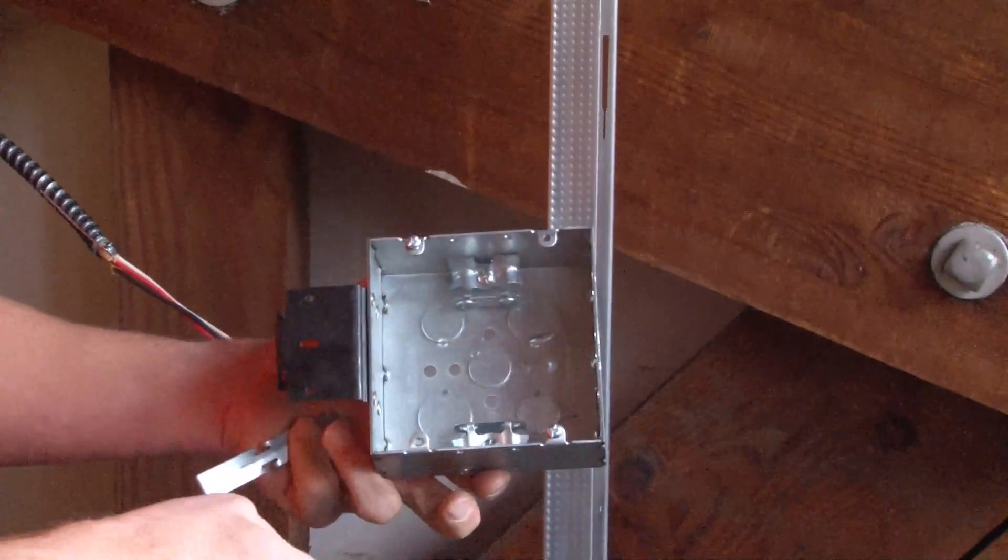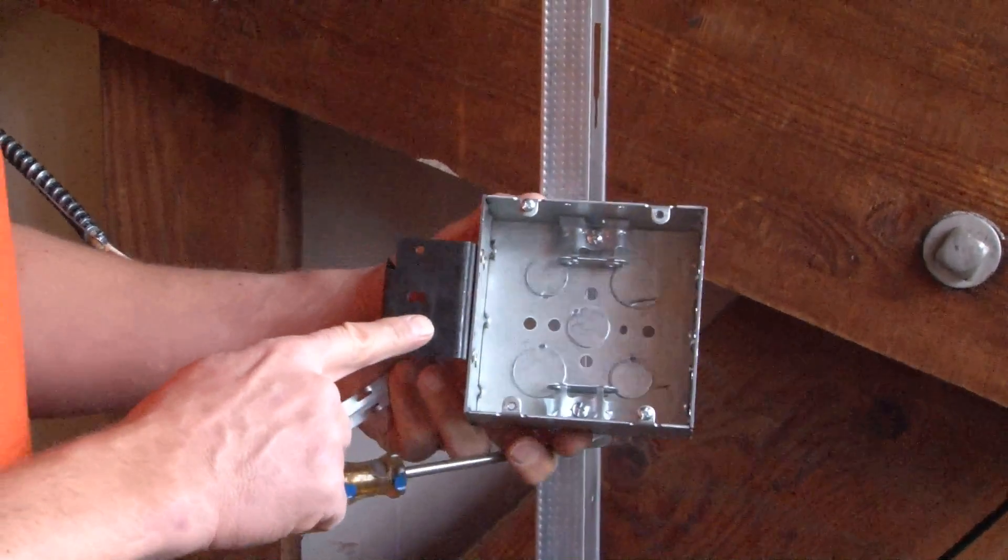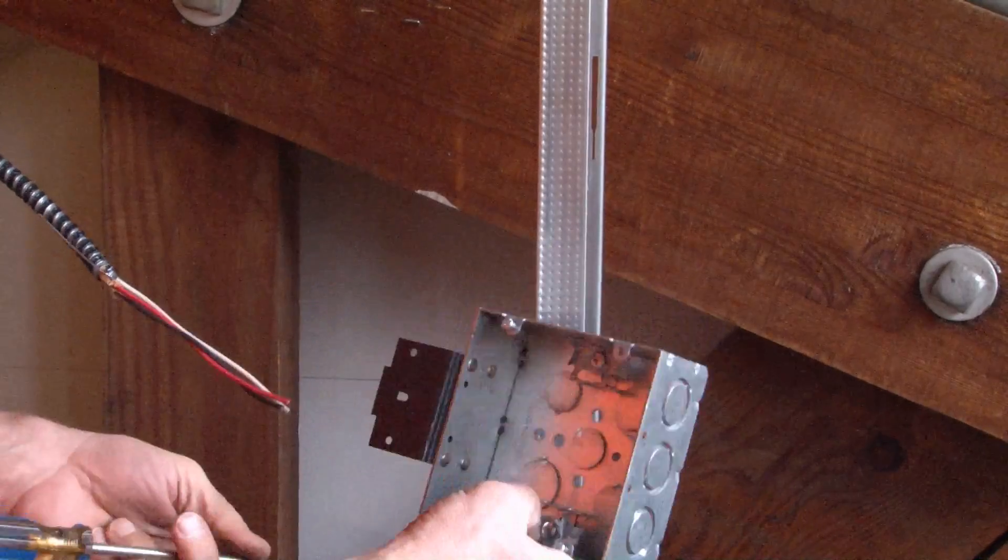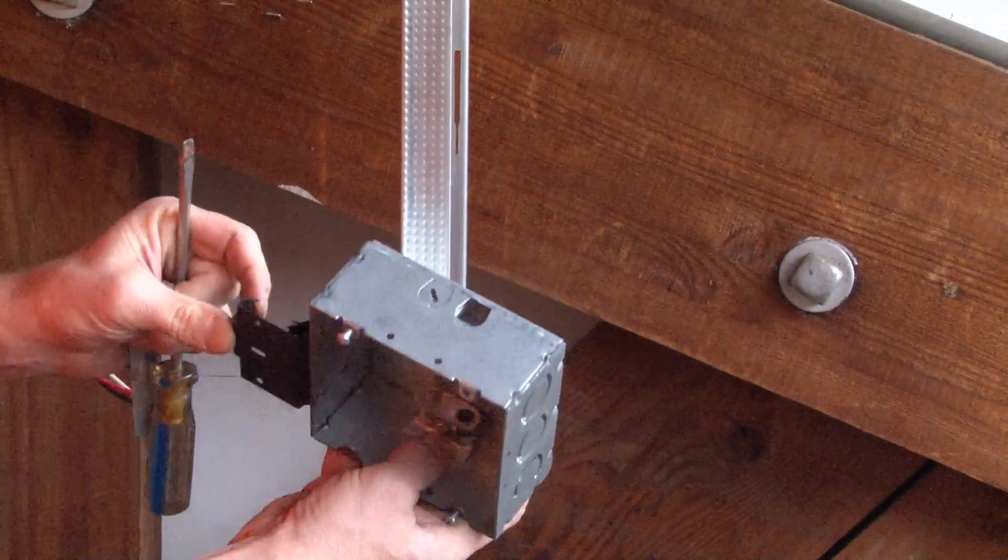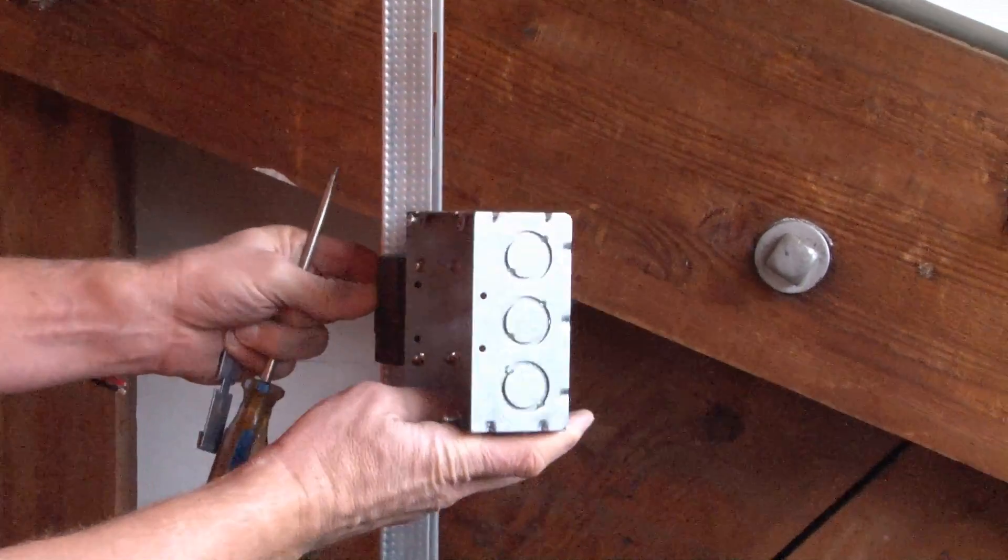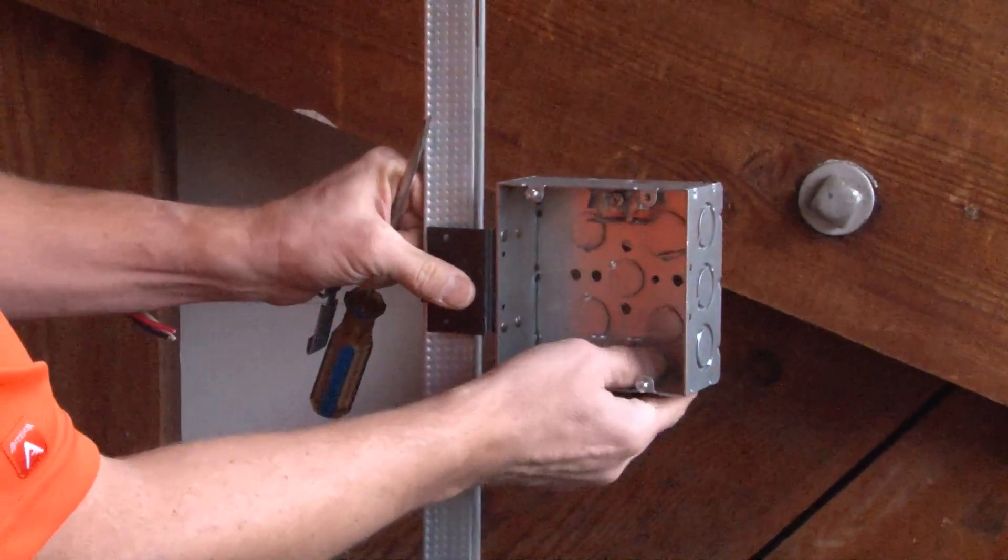At this point, you can use the spring steel metal stud bracket to snap right on the face of the stud. Simply align the teeth with the edge of the stud and snap it in place.